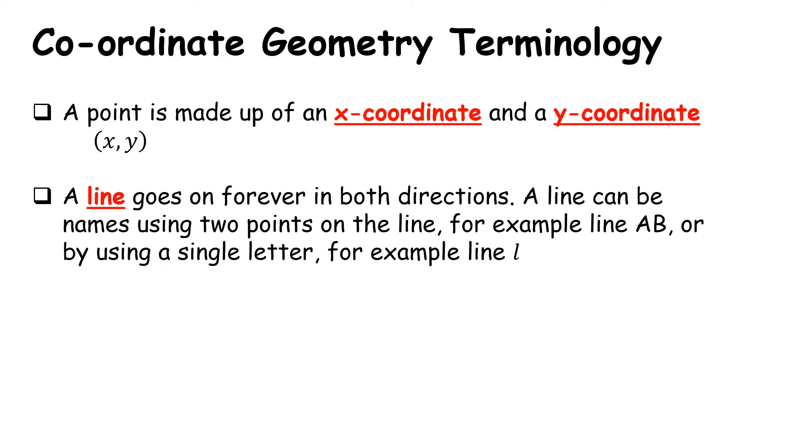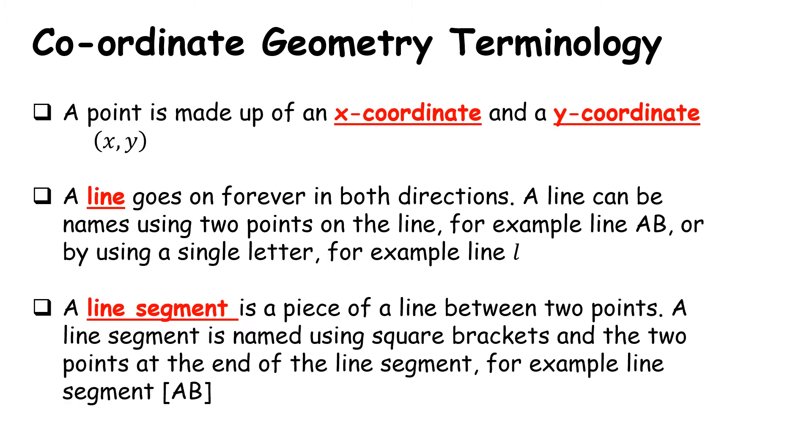So a line goes on forever in both directions. A line can be named after two points that are on the line. For example, a line that contains the point AB can be written as line AB or they can simplify this and give it a single letter for example L. A line segment is then a piece of a line between two points. So if I'm talking specifically about a part of that line, remembering that the line goes on forever, I would use square brackets. So the line segment AB. This is all a reflection of what we've seen in our geometry section.